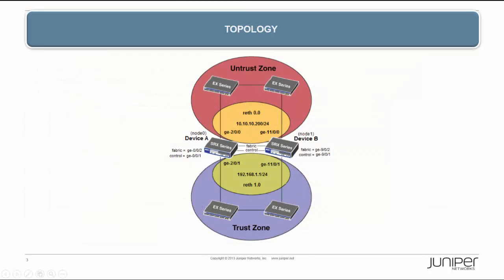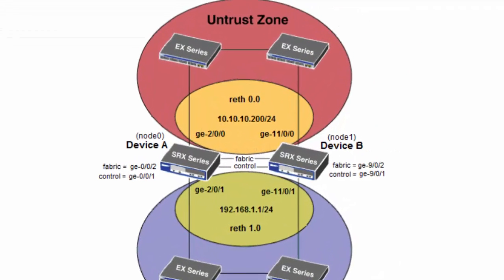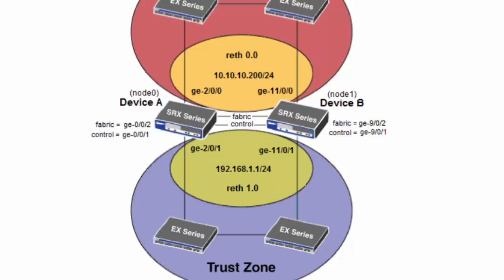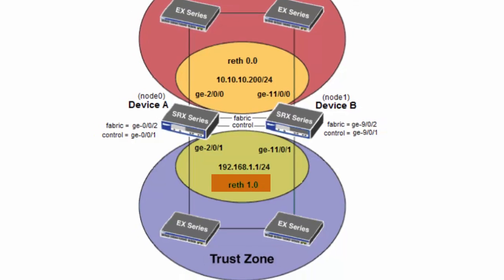Here is the topology diagram for this configuration example. It is helpful to point out the interfaces that we will be configuring. Interface GE0-0-1 is always used as the control link when clustering SRX650 devices. GE0-0-2 will be used as the fabric or data link in this example. GE2-0-0 interfaces will be defined in the untrust zone and form redundancy interface RETH 0.0. GE2-0-1 interfaces will be defined in the trust zone and form redundancy interface RETH 1.0.